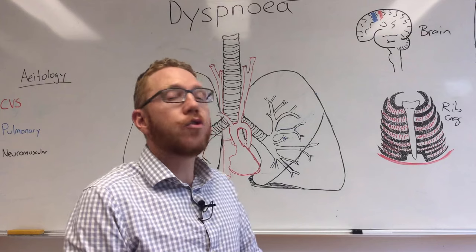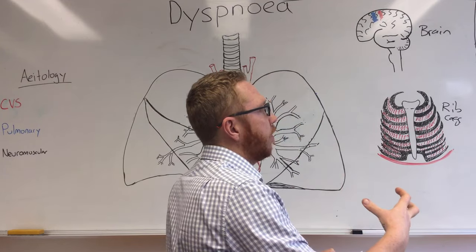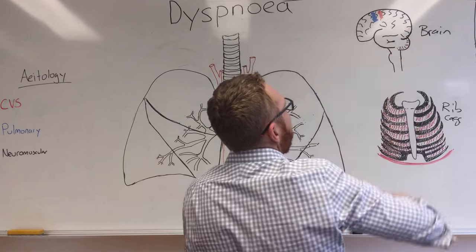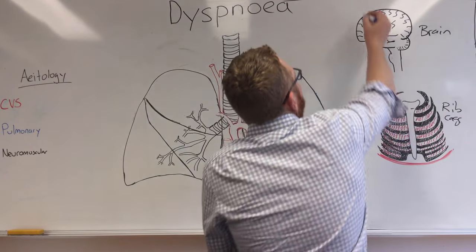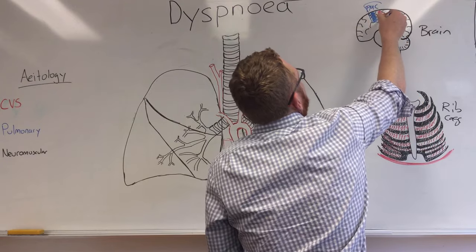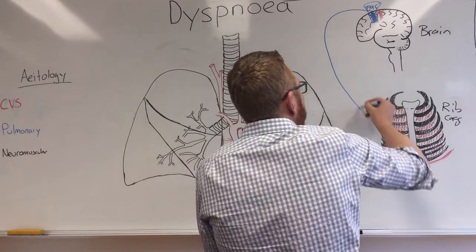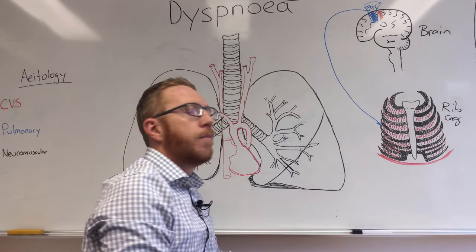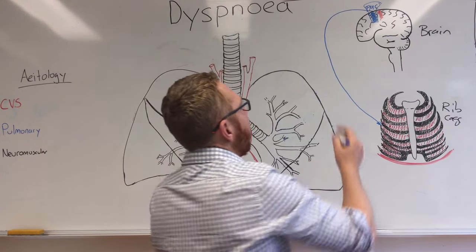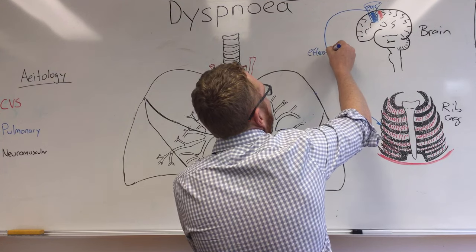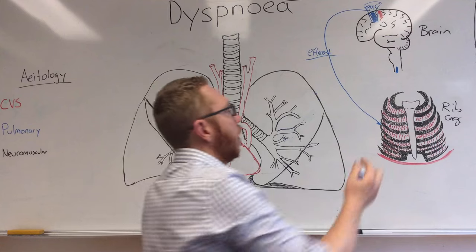We'll start with the increased drive, or wanting to actually breathe — the force of breathing, the ventilation drive. Up here in the brain, we've got a blue area and a red area. The blue area is what we're going to consider the primary motor cortex. When you are breathing, this is going to be sending out an efferent signal going to your respiratory muscles — that being your intercostal muscles for either inspiration or expiration. So we do have an efferent output here.